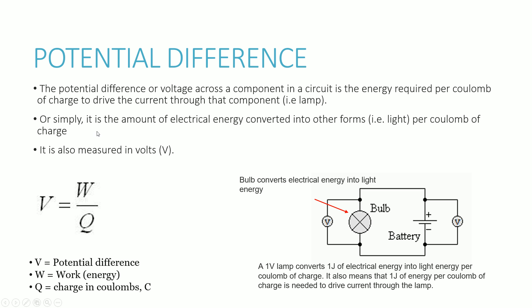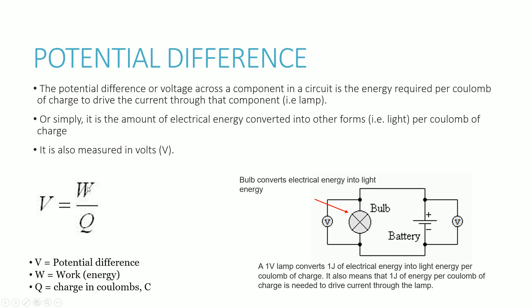To put it simply, the potential difference or voltage across a certain component is the amount of electrical energy that is converted into other forms — for example, light in a light bulb — per coulomb of charge. This is just like EMF, measured in volts, and the formula is exactly the same. The only difference is that with EMF the energy is supplied, whereas with potential difference the energy is lost or converted into other forms from electrical energy.